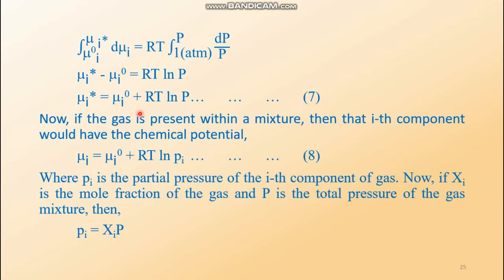Equation number seven is very important. The expression is: mu i star equals mu i zero plus RT ln P. Here, mu i star is the chemical potential of the gas when it is pure at any temperature T and any pressure P, and mu i zero is its chemical potential at STP. Now, if maintaining this pressure P the gas is mixed up with some other ideal gases, then the partial pressure of the ith gas becomes something else — it is no more capital P. Let us assume it is small letter Pᵢ, and now the ith gas becomes the ith component of gas within the mixture.